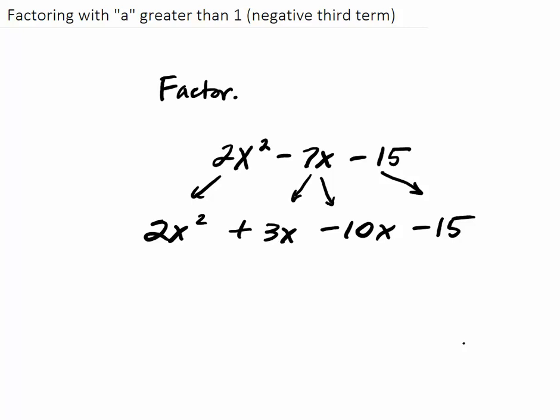So now at this point, this is a four-term polynomial, and I'm going to go ahead and group these first two. This is my factor by grouping, so I'm going to pull out a common factor from these first two.